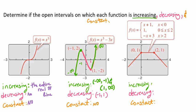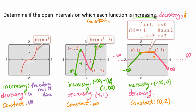For our third graph, we are increasing from negative infinity to 0. Then constant from 0 to 2. Then decreasing from 2 to positive infinity. Remember, going right is positive infinity and going left is negative infinity. So: increasing on (negative infinity, 0), constant on (0, 2), and decreasing on (2, infinity).